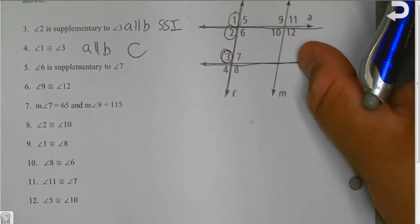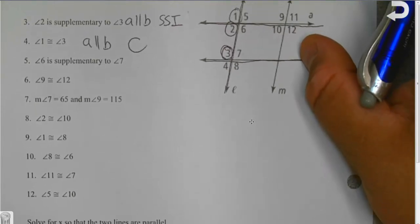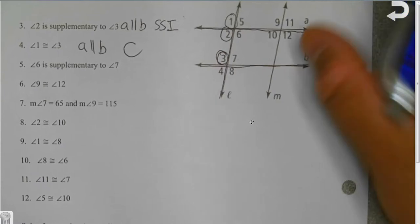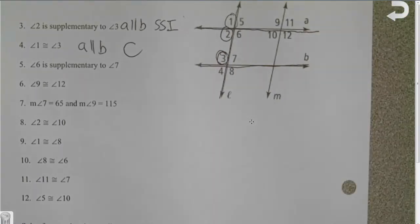All right. I want you guys to try 5 through 12. And remember, use the ones you know. Same side interior, same side exterior, alternating interior, alternating exterior, and corresponding. If it's not one of those 5 things, nothing is parallel.